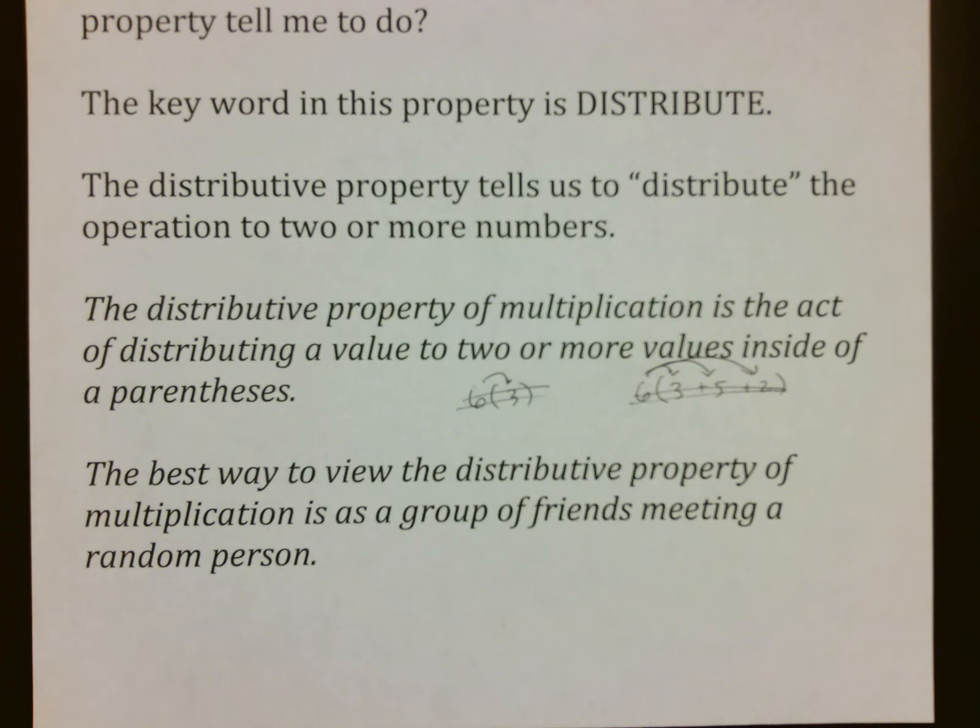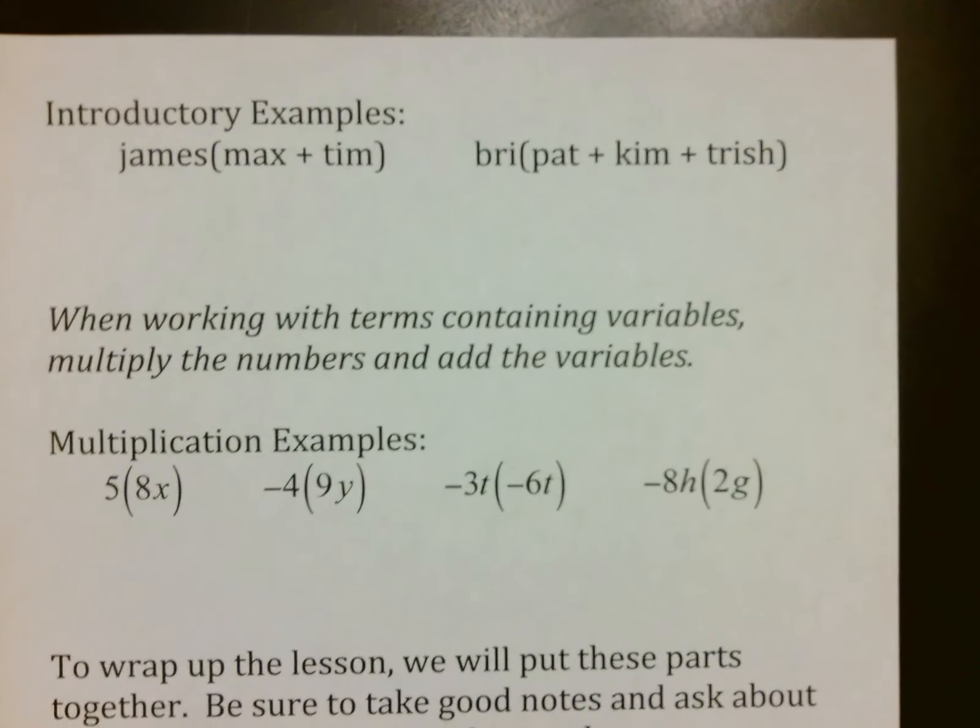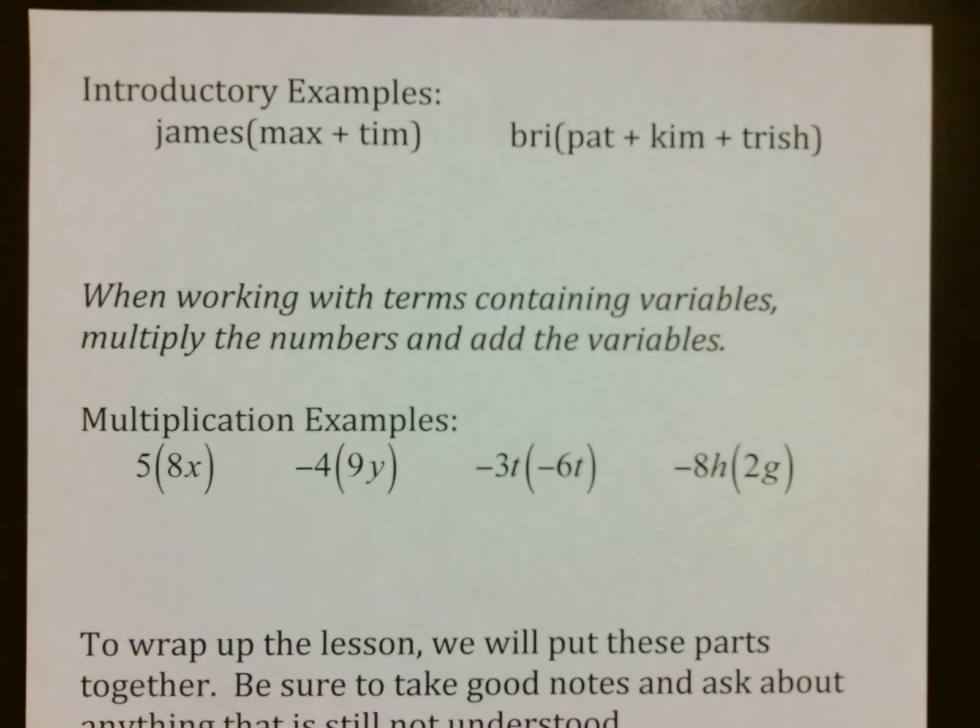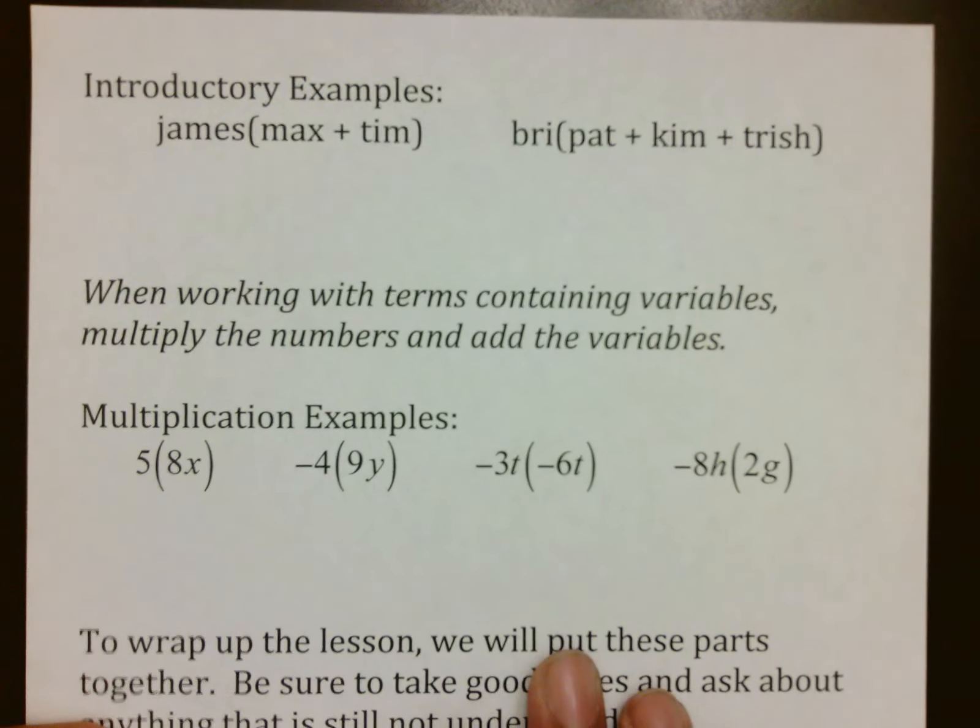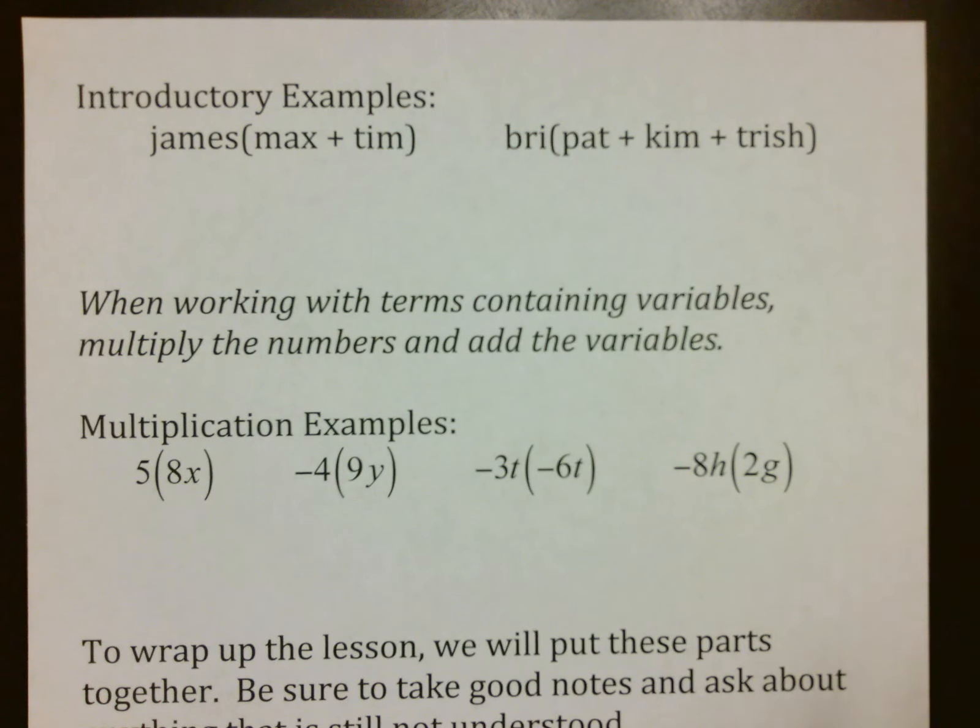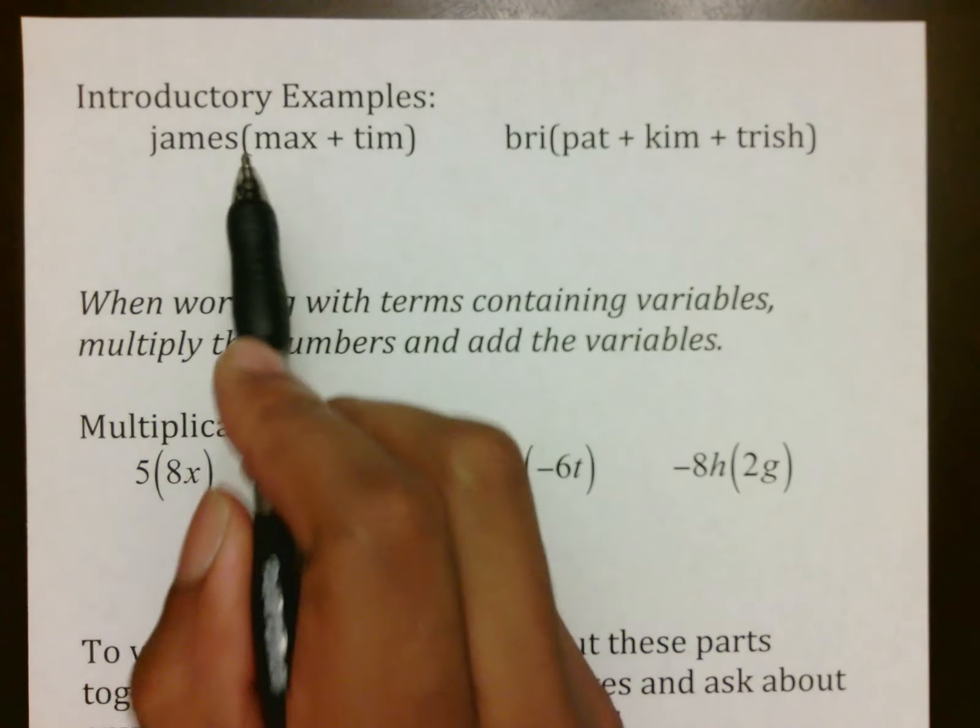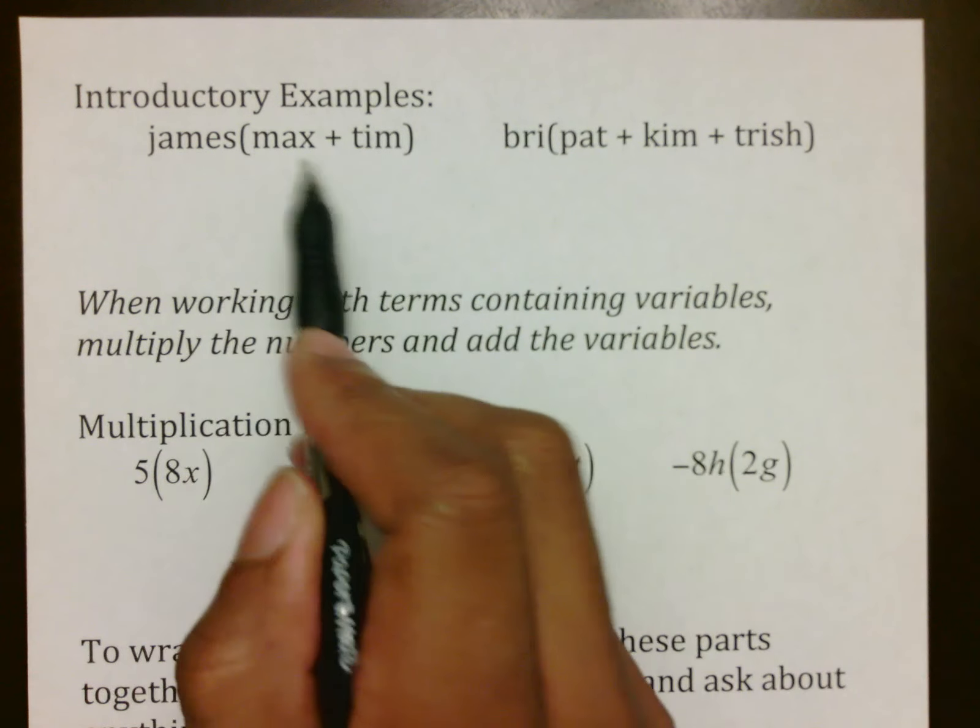The best way to view the distributive property of multiplication is as a group of friends meeting a random person. Whenever people meet and there are friends there, you have handshakes that go on. The best way to view it for those who need this visualization is that the parenthesis shows you who knows each other.